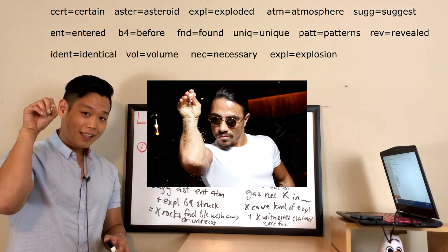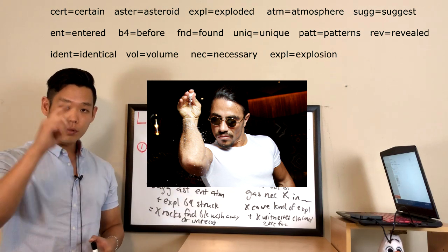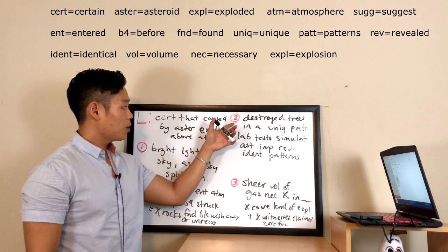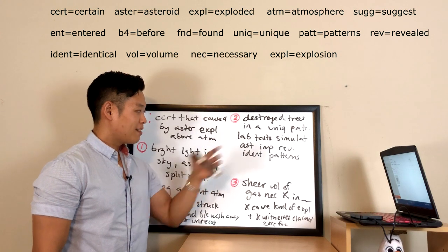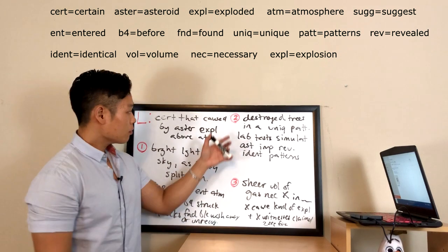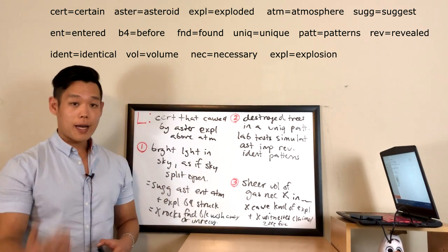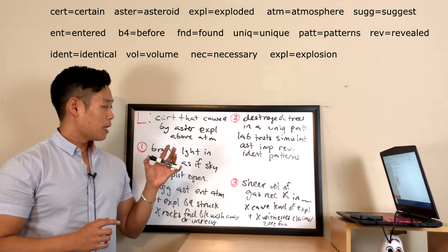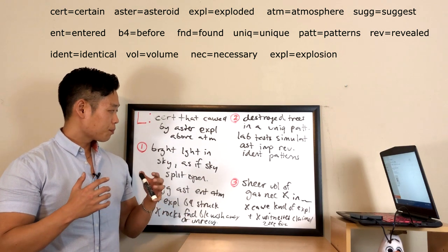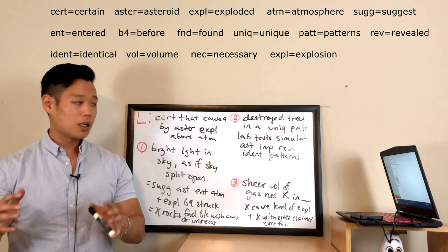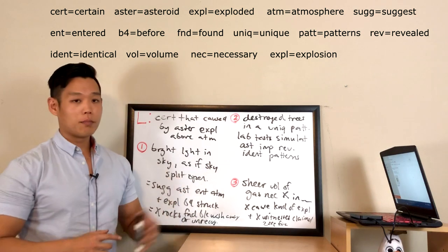I'll be adding a lot of detail and pizzazz to earn bonus points — don't forget to do that as well. The lecture's second argument: the asteroid destroyed trees in a very unique pattern. Russian laboratory tests simulated an asteroid impact, and these tests revealed that the tree patterns in Tunguska were identical to those produced in the simulations, making it fairly conclusive that an asteroid devastated trees across a 50-kilometer area in that distinctive way.